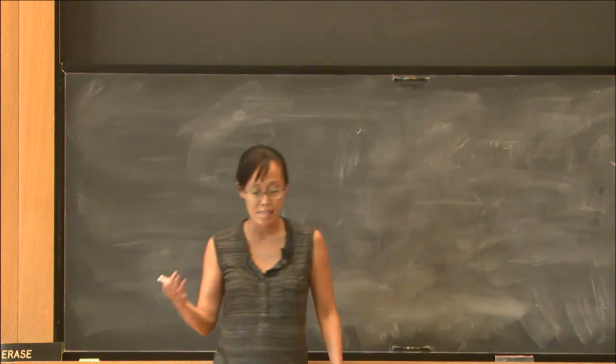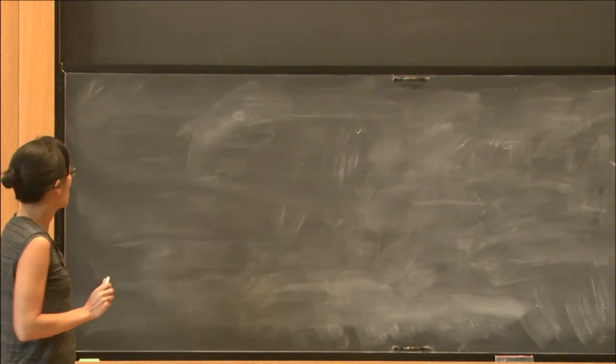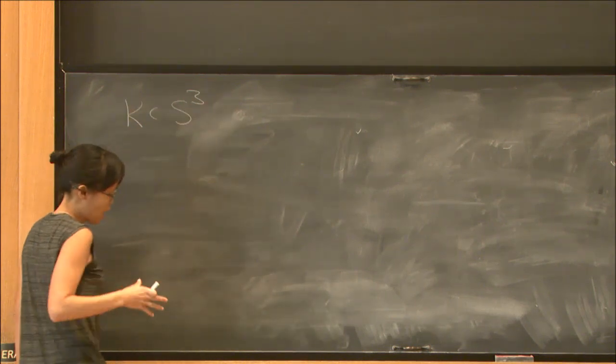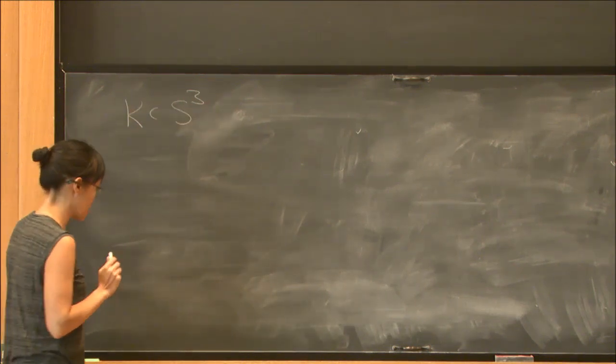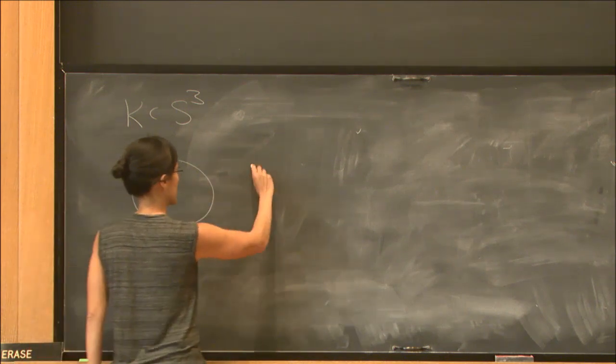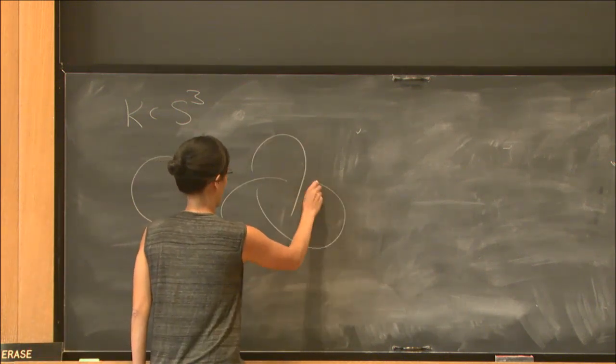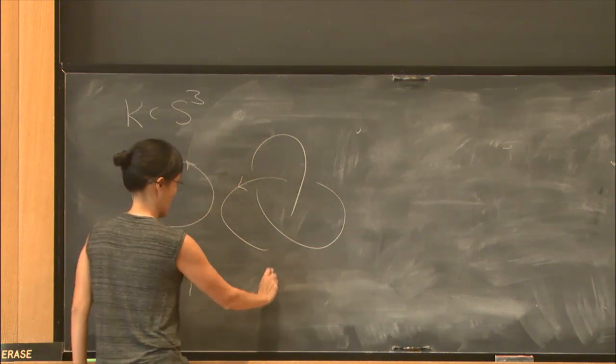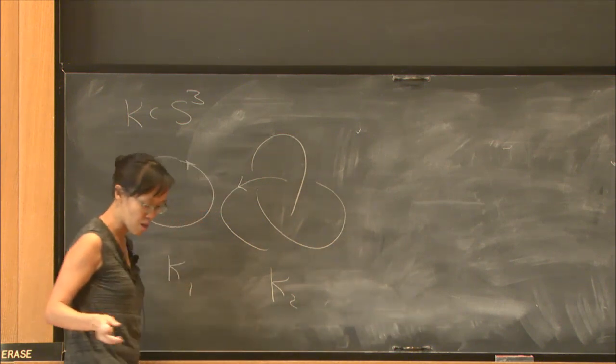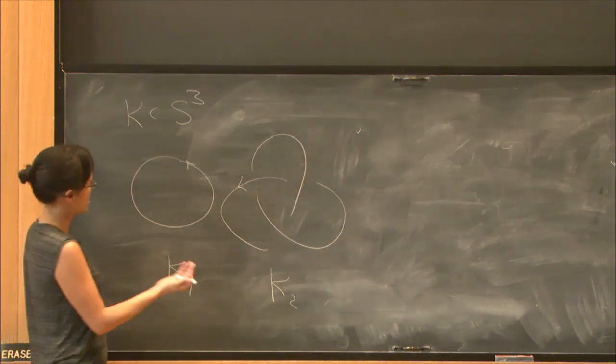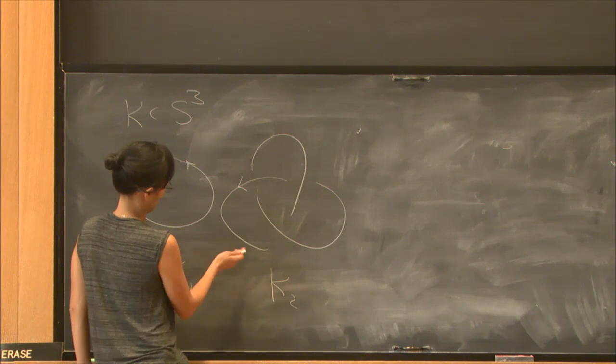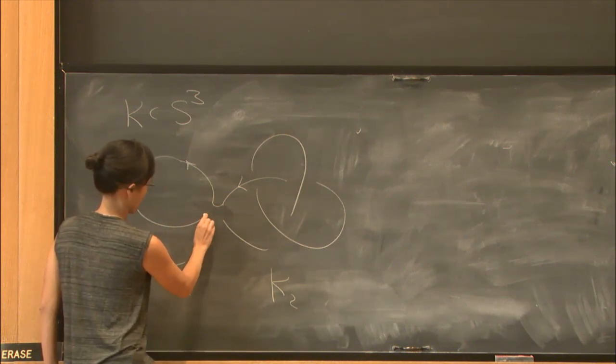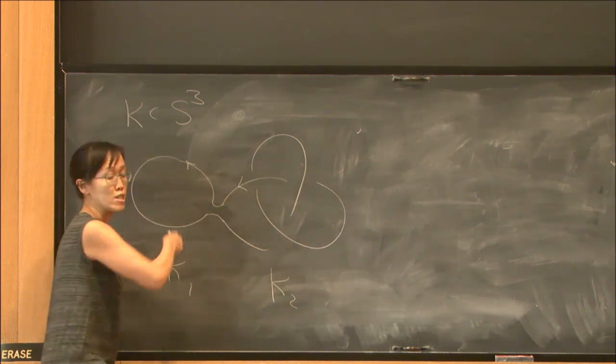So I should start by telling you what the knot concordance group is. We'll consider knots in S³—a smooth embedding of a circle into the three-sphere. Here are some examples of knots; our knots are going to be oriented. There's an operation on knots called the connected sum. It's easiest to just show you what it is—you just have two knots and you connect them in a way that preserves the orientation.